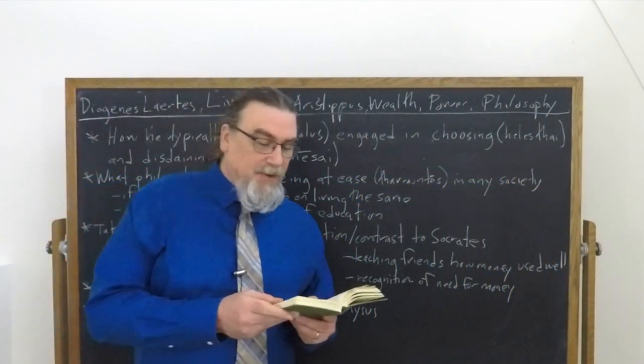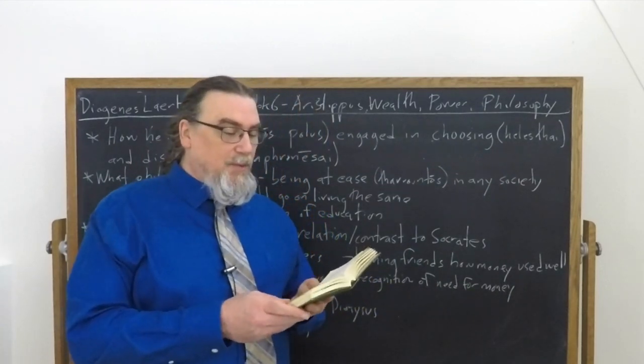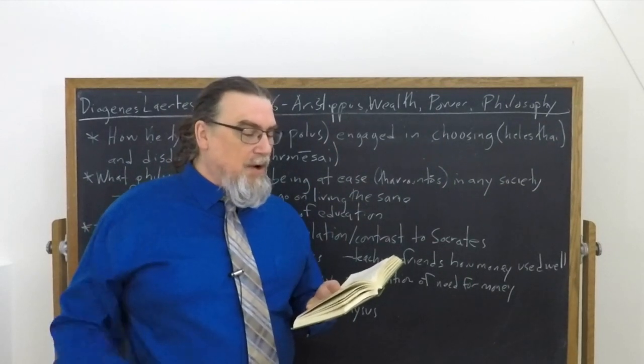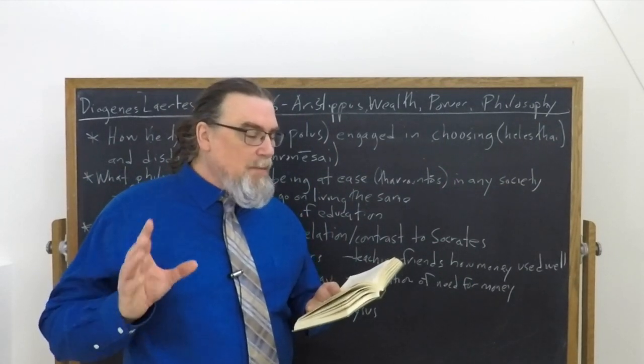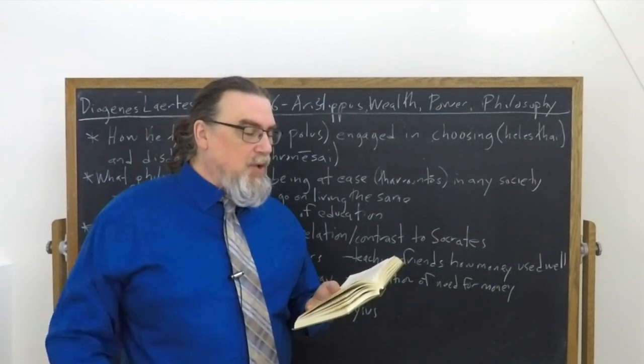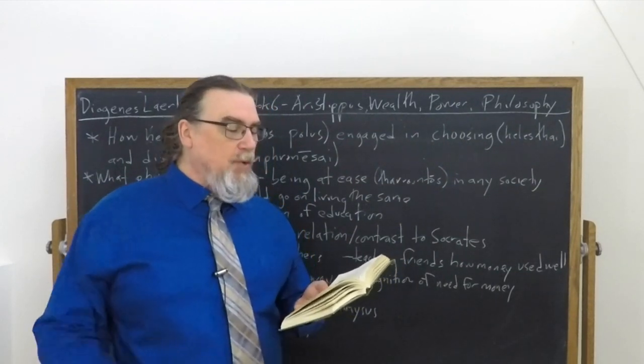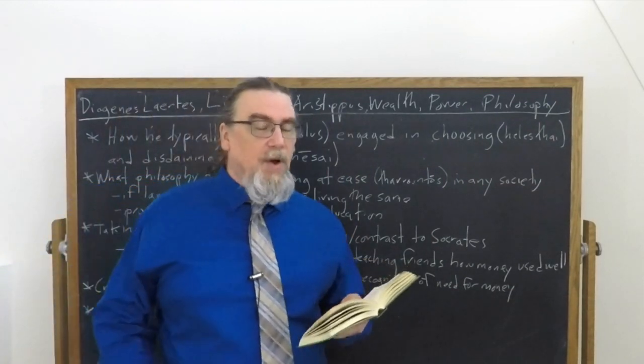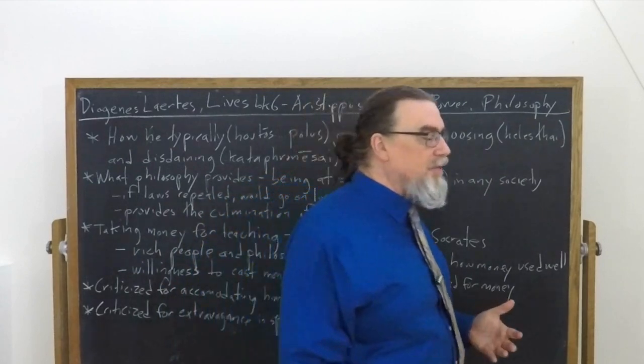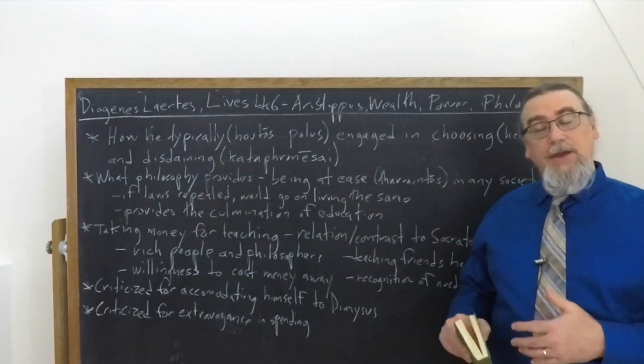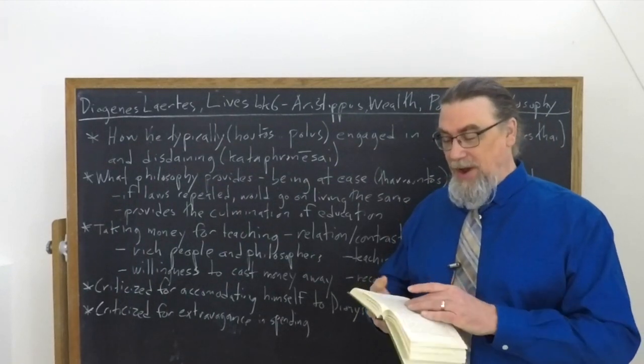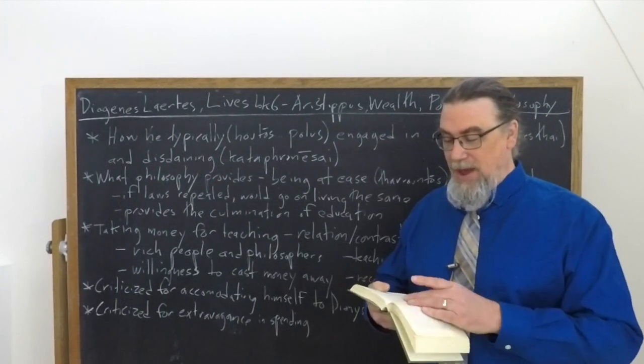And right after this is where we've got that quip about when I needed wisdom, I went to Socrates. I come to you for money, but he goes on just a little bit before that Dionysus asked him what he was come for. And he said, it was to impart what he had and obtain what he had not meaning. I'll give you some of my wisdom, my guidance and how to live your life. And you will give me funds in return.